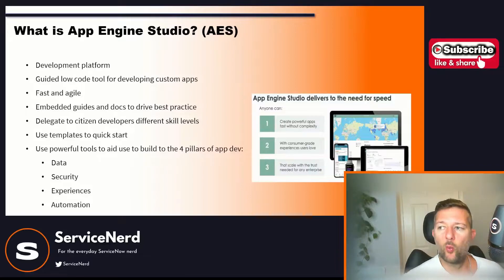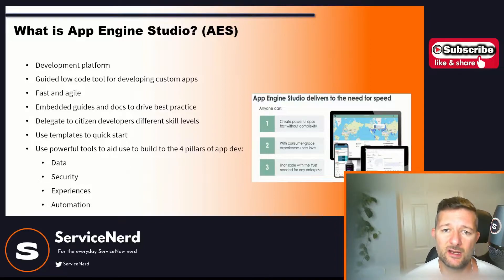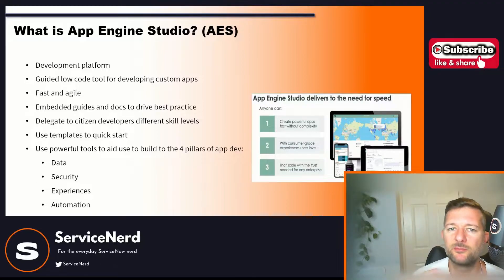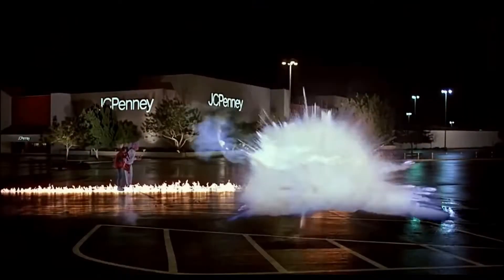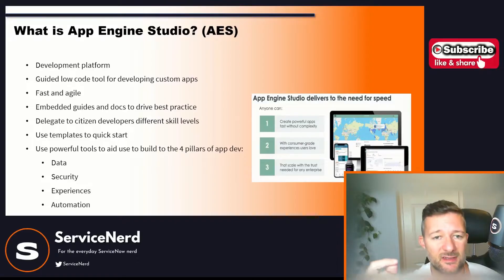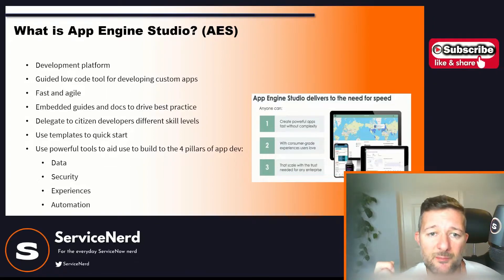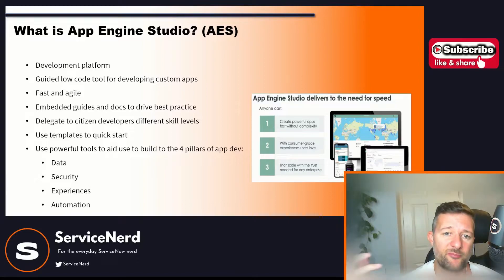So what is App Engine Studio AES? It's a development platform. It's a guided low code tool for developing custom apps — low code being one of the key words there. It's fast and it's agile; we can spin things up pretty quickly. It has things like guides and docs to drive best practices.